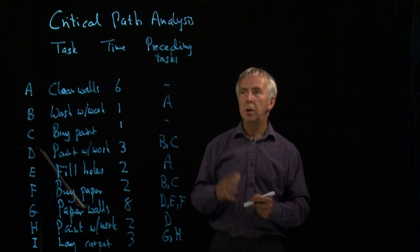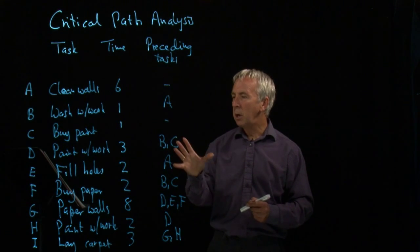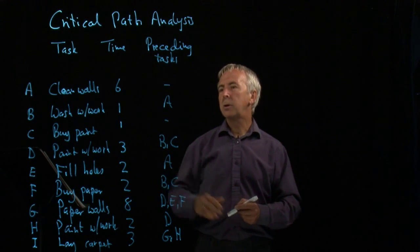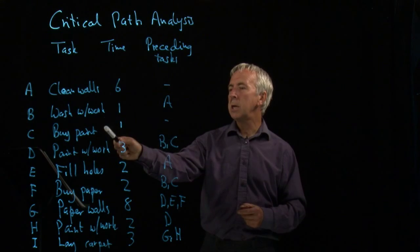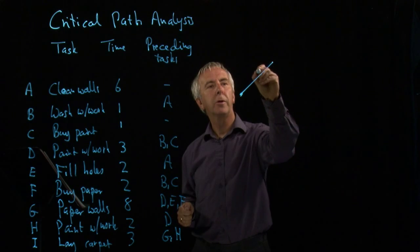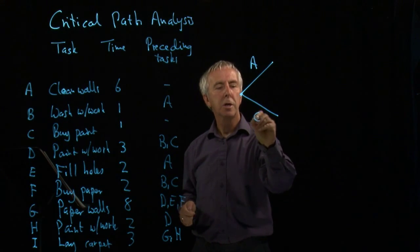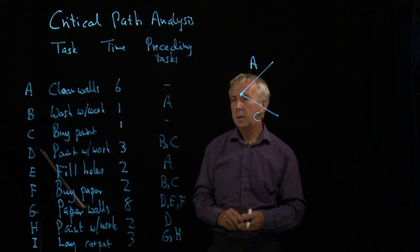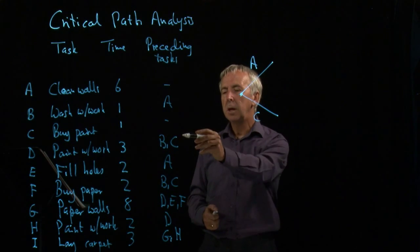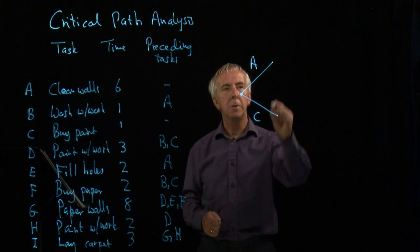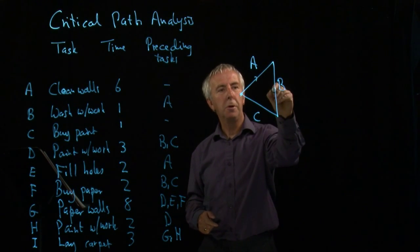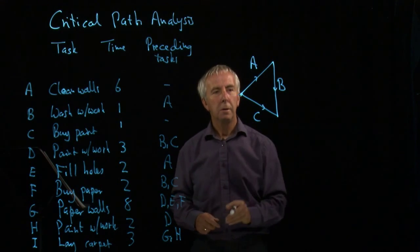So the first thing we need to do, to do critical path analysis, is to get a network diagram of these activities. So we look at the task and see where we're going to start. Well, A and C have no predecessors. So we would draw this like this. Here's task A, and here's task C. B can't start until A has finished. And later on we're going to need B and C to be done. So we'll draw B like this.